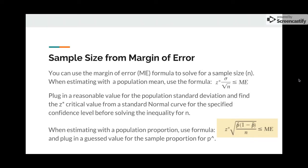You can use the margin of error formula to solve for a sample size N. When estimating with a population mean, use the formula right here. Plug in a reasonable value for the population standard deviation and find the Z-star critical value from a standard normal curve for the specified confidence level before solving the inequality for N. When estimating with a population proportion, use this formula and plug in a guessed value for the sample proportion for P-hat. A reasonable value to use is P-hat equals 0.5. For extra help with these types of questions, check out Frappy number 6 from the 2012 AP exam. Thank you for watching!